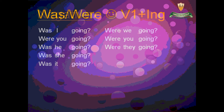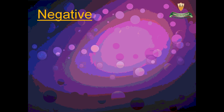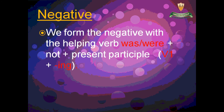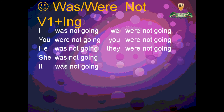We form the negative with the helping verb was or were, plus not, plus the verb plus -ing. I was not going, or I wasn't going. You were not going, or you weren't going.